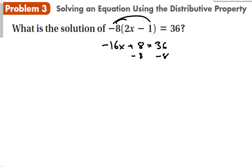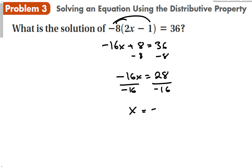Subtract 8 from both sides and simplify. We have negative 16x, and 36 plus a negative 8 is going to be a positive 28. Divide both sides by negative 16. We have negative 28 over 16, which doesn't go in evenly — that's okay, we do have to simplify. 28 and 16 are both divisible by 4, so we can factor out the 4 and cancel, leaving us negative 7 over 4. It's okay to get a fraction; it's still the number that solves this equation.